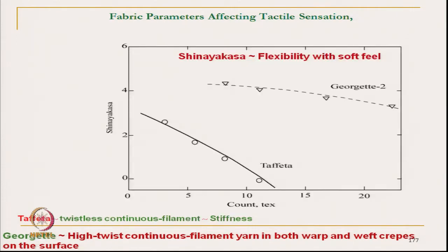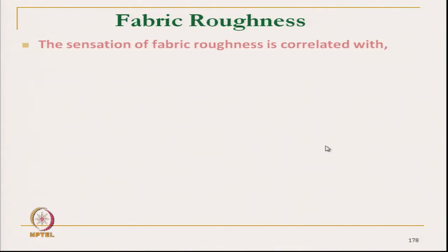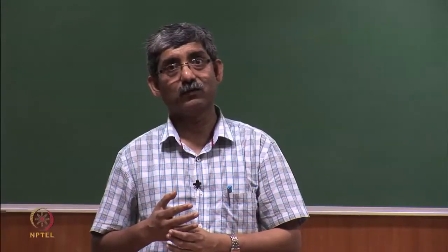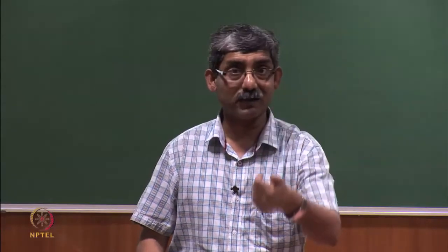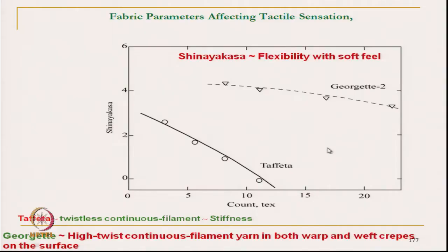Shinaya kasha (flexibility with soft feeling) decreases as yarn count increases, meaning that increasing yarn diameter causes loss of flexibility. The rate of decrease is higher for twistless filament and lower for highly twisted filament. All these parameters — yarn count, type of filament — affect different handle-related aspects of fabric.